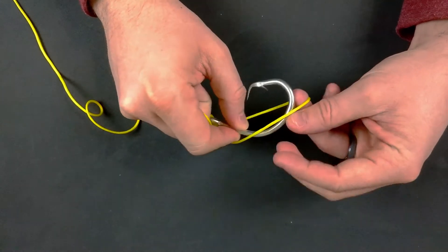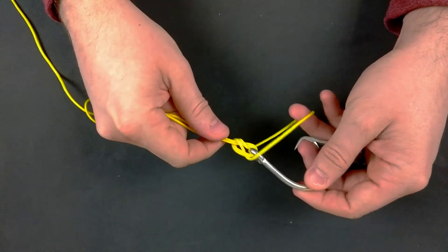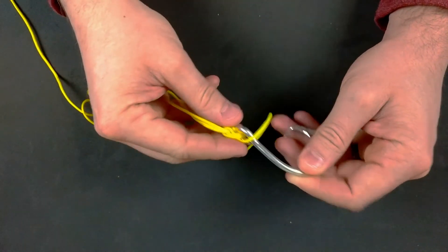This is the step that makes the Palomar knot very strong for fluorocarbon because it prevents slip. It also helps it adhere to itself.